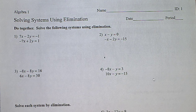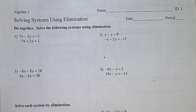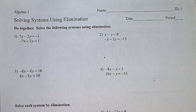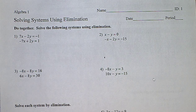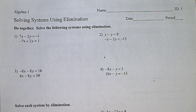Now we have to take what y equals and substitute it into either equation — the top one is suggested because the numbers are smaller. So x minus 5 equals 0. To solve for x, add 5 to both sides, and x is equal to 5. So as a coordinate, the answer is (5, 5).